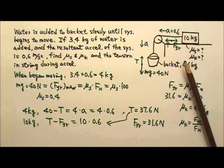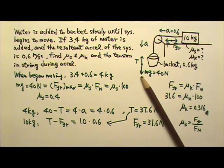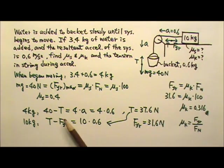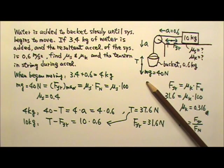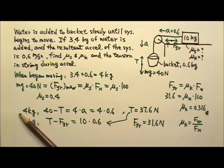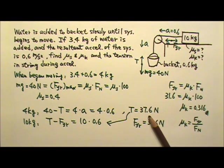But while the system is accelerating, for this part, the tension is no longer 40 newtons. With a non-zero acceleration, these two forces are no longer equal. That's why we had to go through the problem solving procedures to find the tension to be 37.6 newtons.